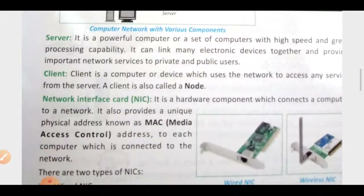The next topic is client. Any system that is accessing the data from the server is known as the client. For example, when we are searching our data on Amazon and Flipkart, the system where all the Amazon and Flipkart data is stored is called the server. And we are accessing those sites from our computers, laptops, or mobiles — these devices are known as the clients.